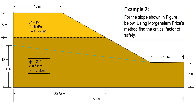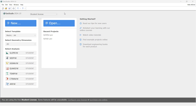Using the Morgenstern-Price method, we will be finding the critical factor of safety for this slope. All the dimensions for this slope are given, and the properties of both layers are also given. So let's jump back to the software to start our analysis.